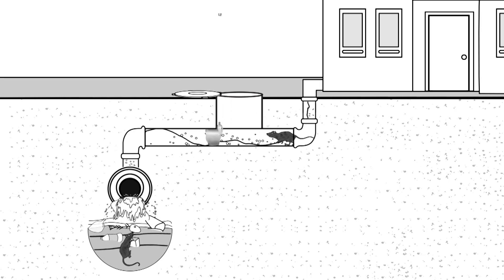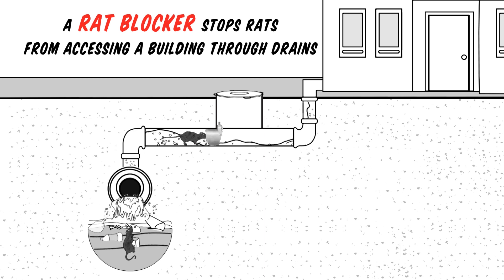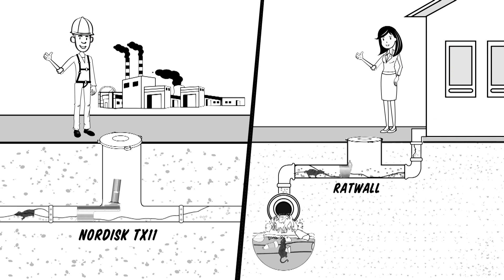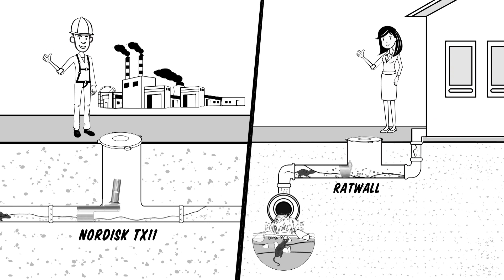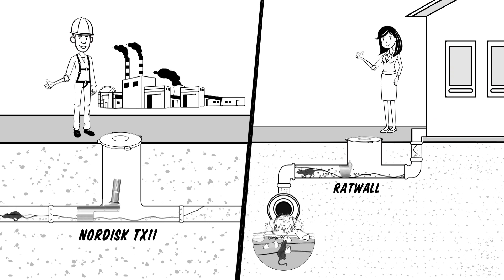A rat blocker stops rats accessing a building through drains. Lucy and Dave learn that a choice of rat blocker is available to suit industrial or domestic use.